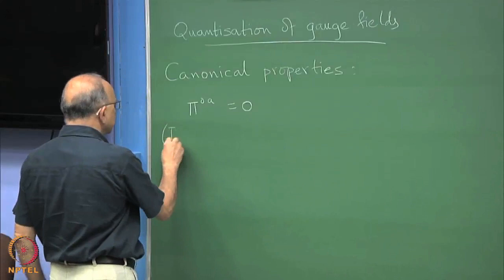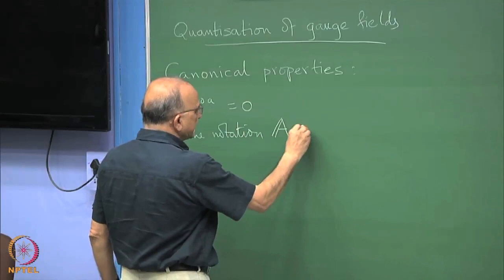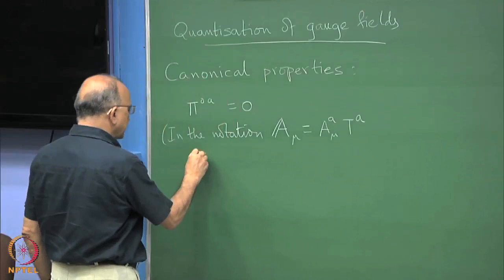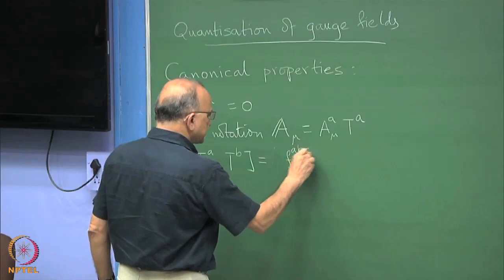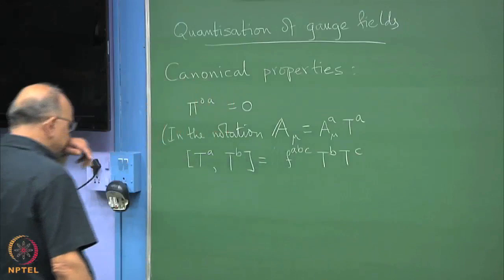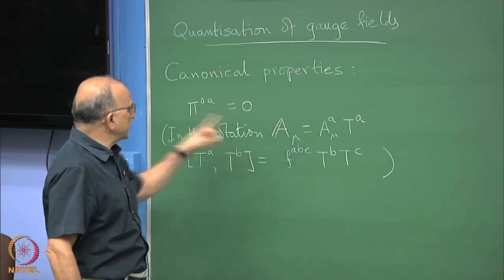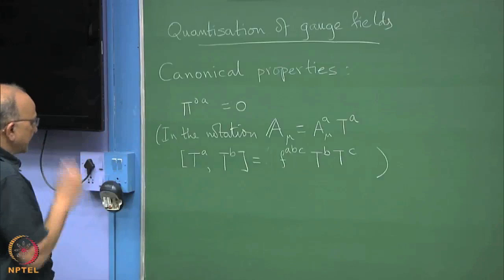Write in the notation that the gauge potentials are written as A_μ^A T^A, and T^A are generators. This π₀ just means that the conjugate to A₀ are all 0. The a index just means the internal group index in the adjoint representation.